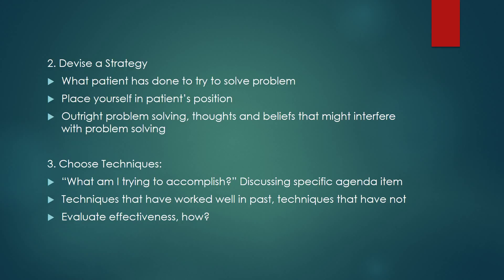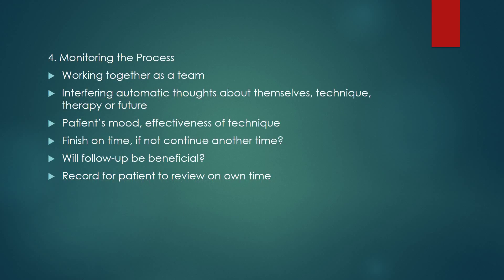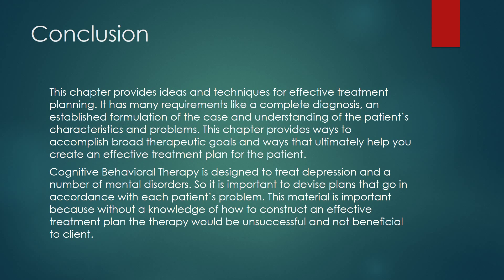Third, choose techniques: the therapist asks, what am I trying to accomplish with the patient? They discuss specific agenda items and consider techniques that have worked well in the past versus those that have not, evaluating effectiveness by asking how the technique has been beneficial. Fourth, monitor the process: the therapist asks, are we working together as a team? Does the patient have interfering automatic thoughts about themselves, the technique, therapy, or the future? Is the patient's mood lifting and is the technique working? The therapist should also consider time management, whether to continue at a different session, whether follow-up homework would be beneficial, and whether to record the session for the patient to review at home.